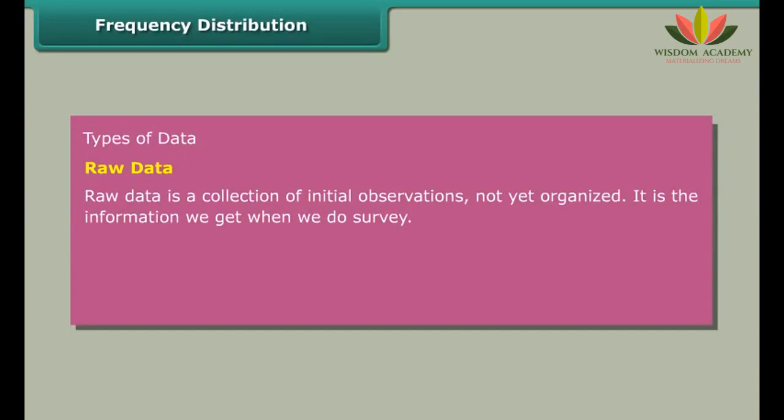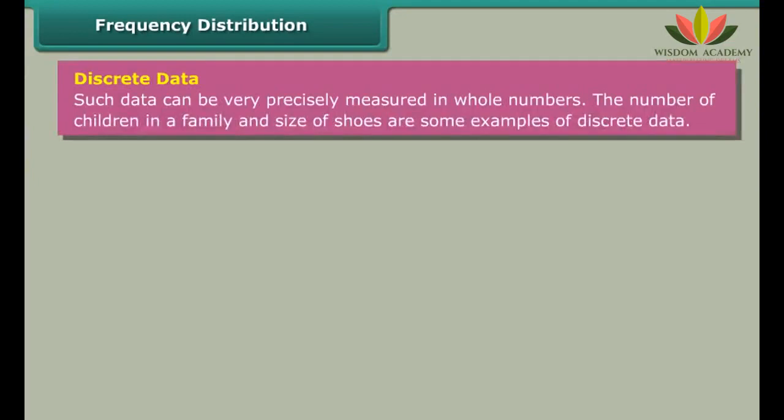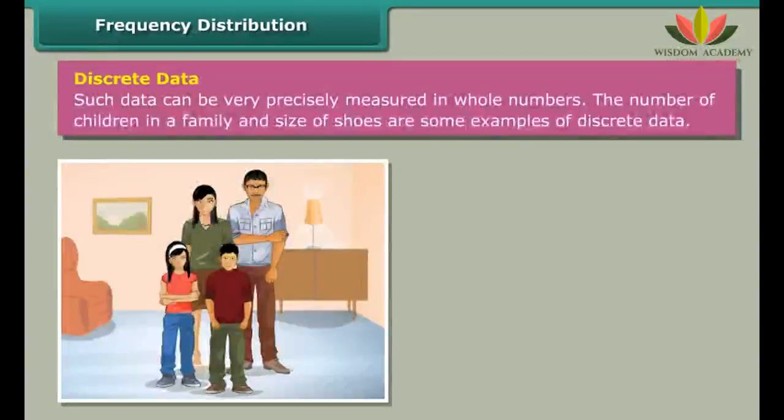Frequency distribution - Types of data: Raw data is a collection of initial observations not yet organized. It is the information we get when we do survey. It can be classified into two types: Discrete data and Continuous data.